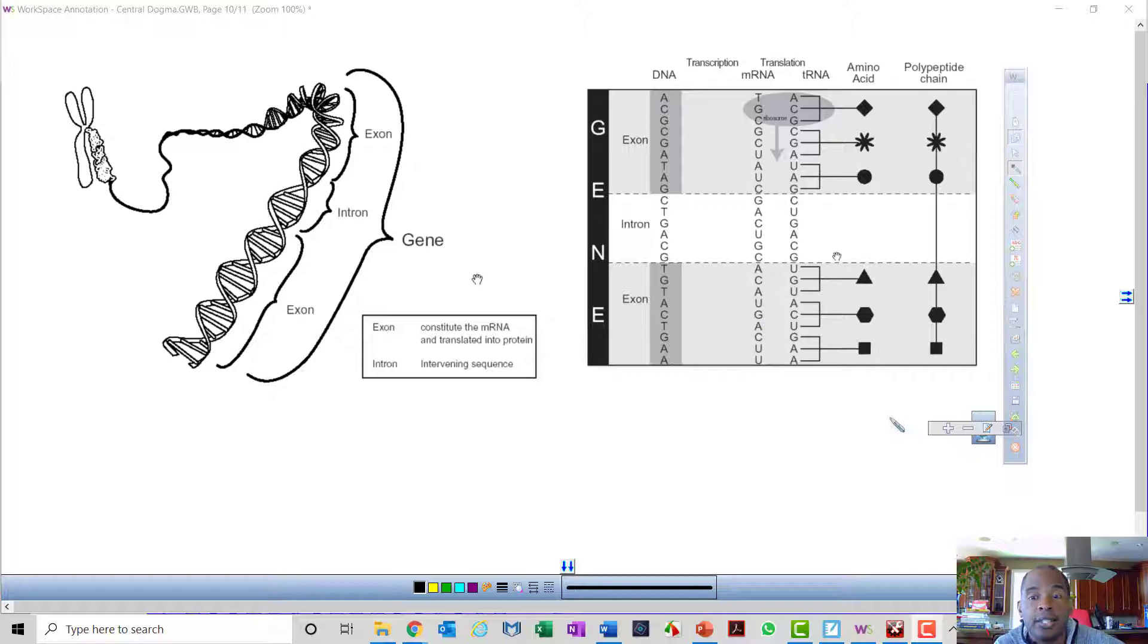And then the next stage I'll talk about is translation, where the codons of the mRNA are each representing an amino acid, and those amino acids are then polymerized into a polypeptide chain, which forms a protein.